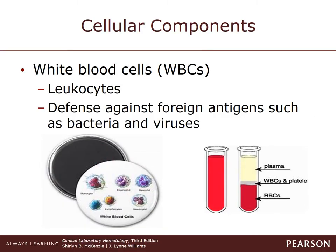White blood cells make up about 1% of the total blood volume. They are also called leukocytes. They are loosely related to cell types dedicated to protecting their host from infection and injury. White blood cells are transported in blood from their source — usually the bone marrow or lymphoid tissue — to their tissue or body cavity destination, where they can fight against foreign antigens such as bacteria and viruses.